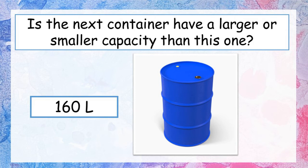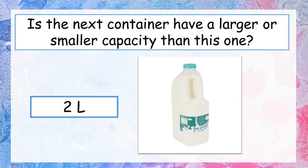Our next container is this barrel of oil, which is 160 litres, so it is much much larger capacity than our last mug. Two more — you've got them all right so far, hang in there, you're nearly at the end. Do you think the next container is going to be larger or smaller than this 160 litre barrel? Pause the video and write down your answer. Our next container is this 2 litre of milk — it is smaller in capacity than our barrel.